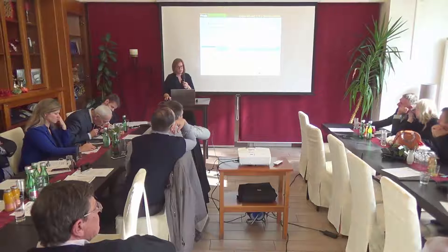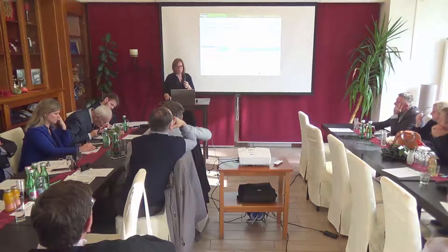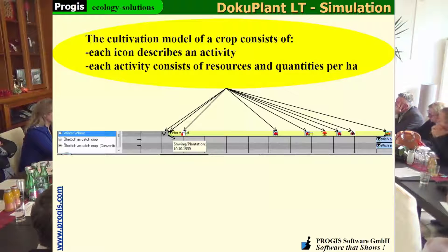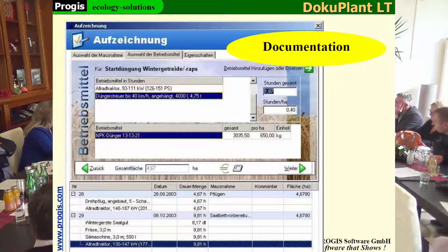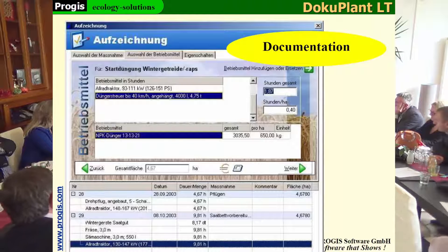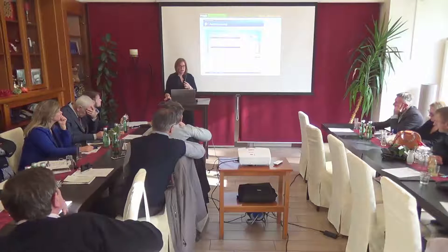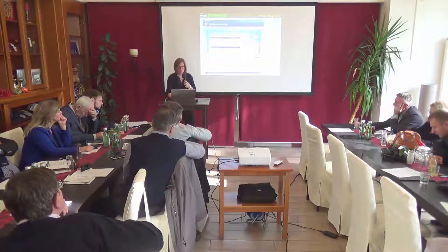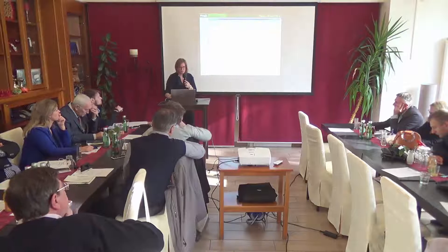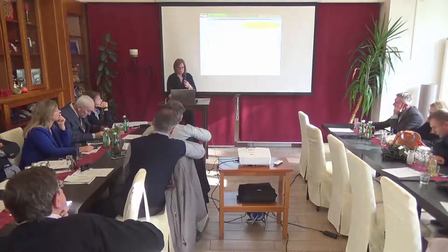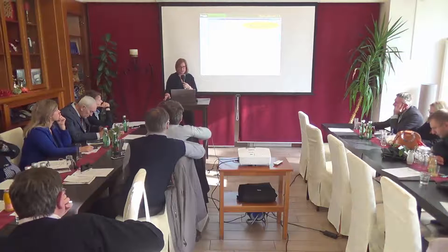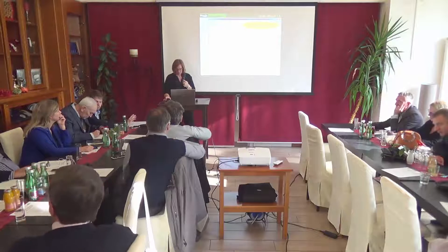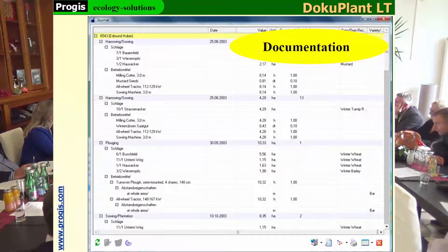The cultivation of a crop consists of icons — each describes an activity from seeding to harvesting, and each activity consists of resources and quantities per hectare. How you finally cultivate your winter wheat is up to you. The documentation is done in three steps: selecting an activity, the resources, and especially documenting some properties for that activity. All documented activities are listed in several reports in different ways and can be printed out and handed over to various control organizations.